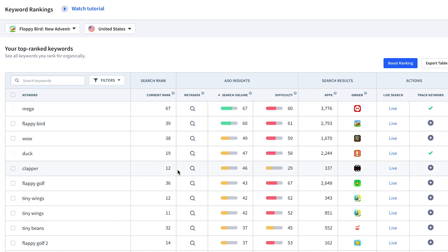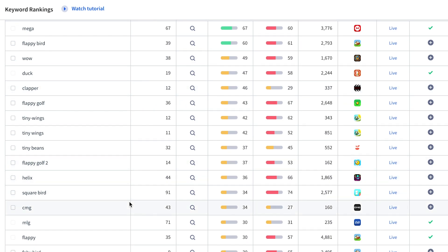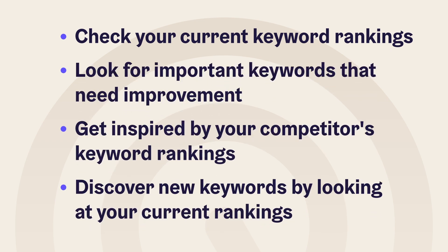Go over your competitors and check out possibilities you can use. For instance, 'CMG' is one we're not using, with good search volume and difficulty — if it applies to your app. Always check what you're already ranking for and see if rankings are dropping for keywords you want to be strong in. You can improve by moving keywords to the app name or subtitle, add new keywords competitors use, and improve keywords you didn't even know you were ranking for.